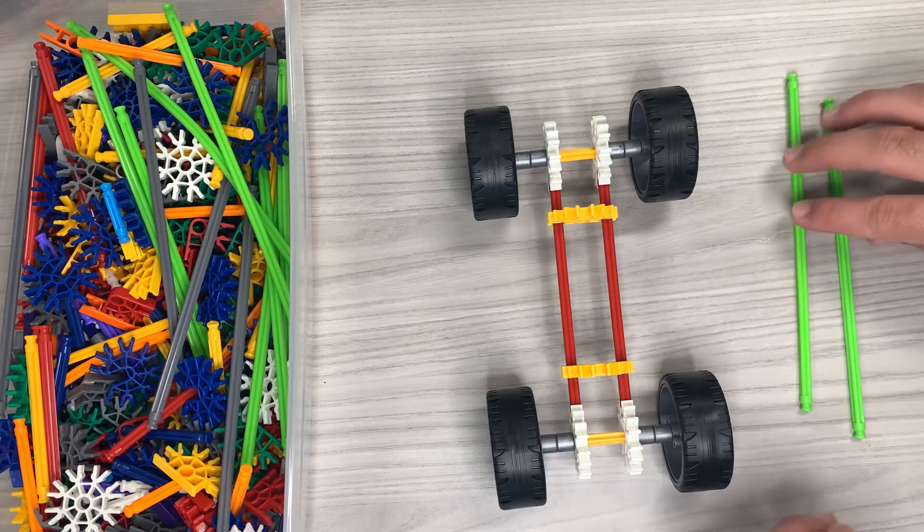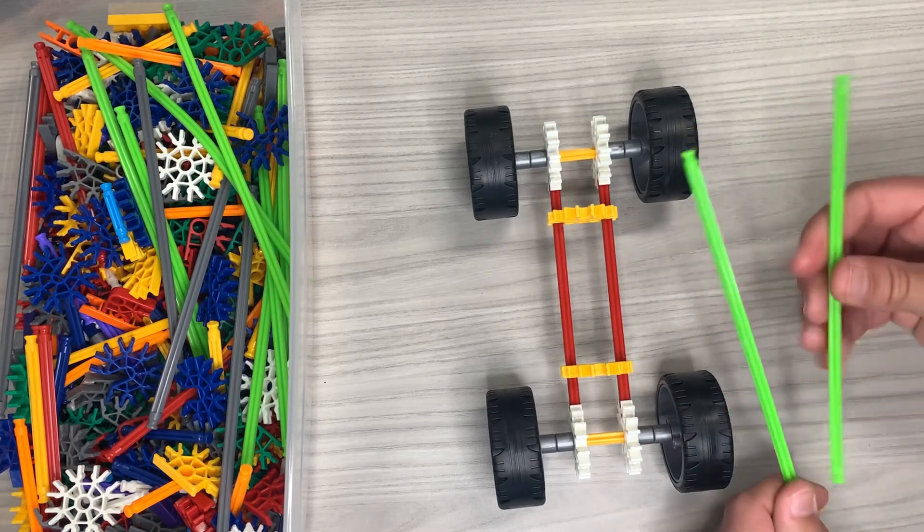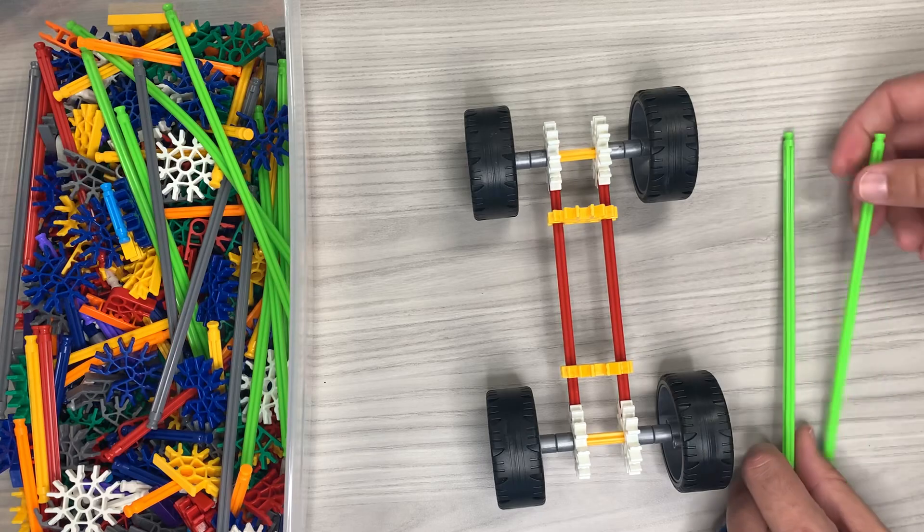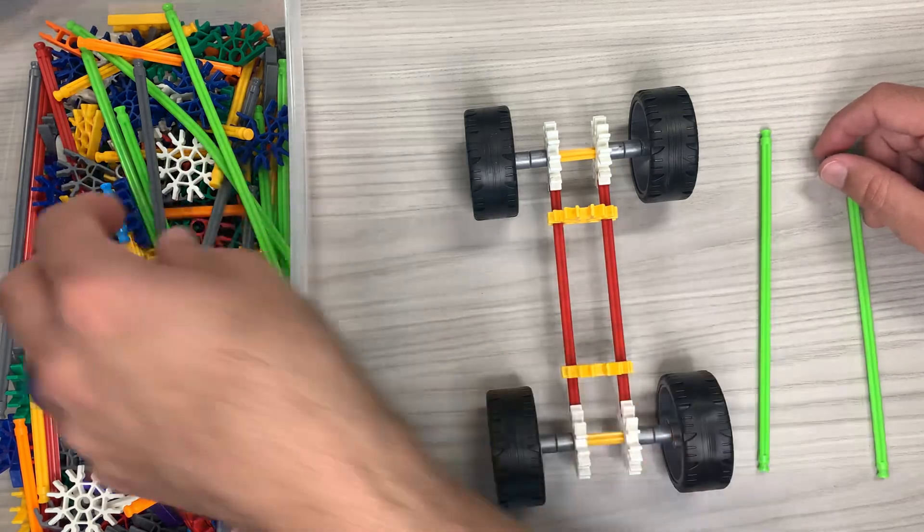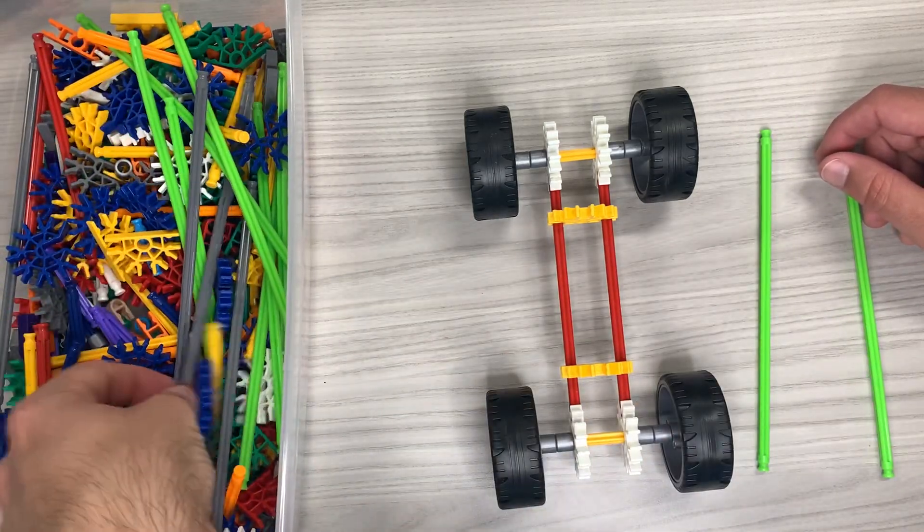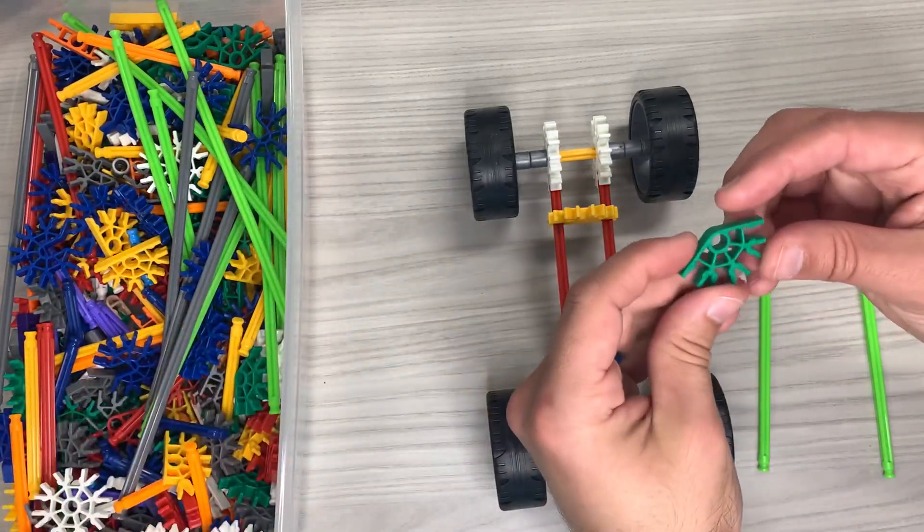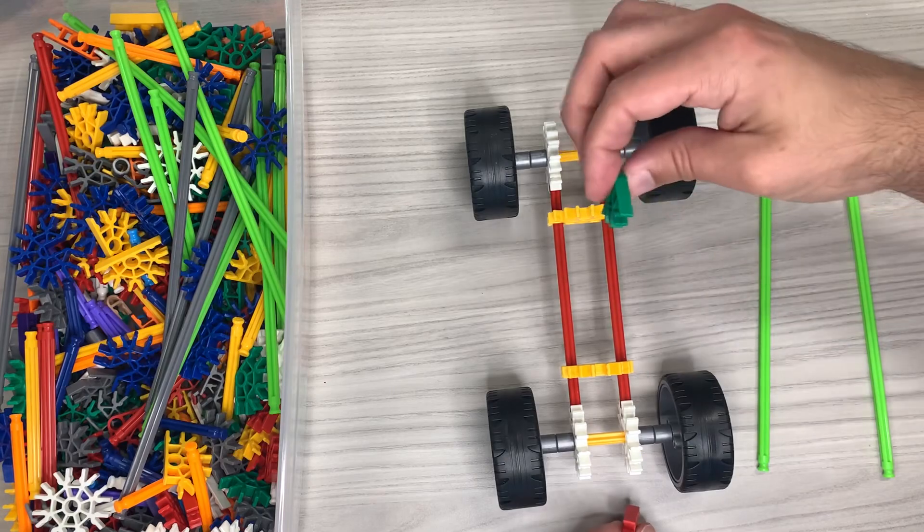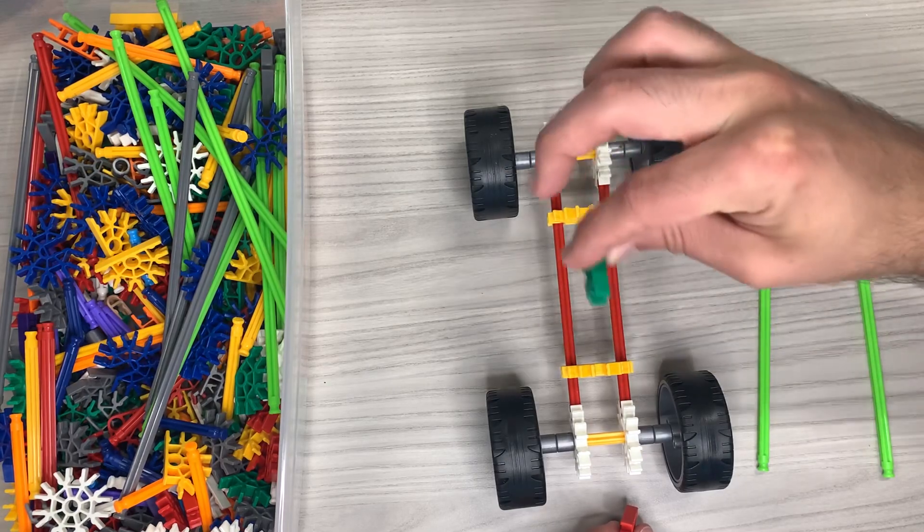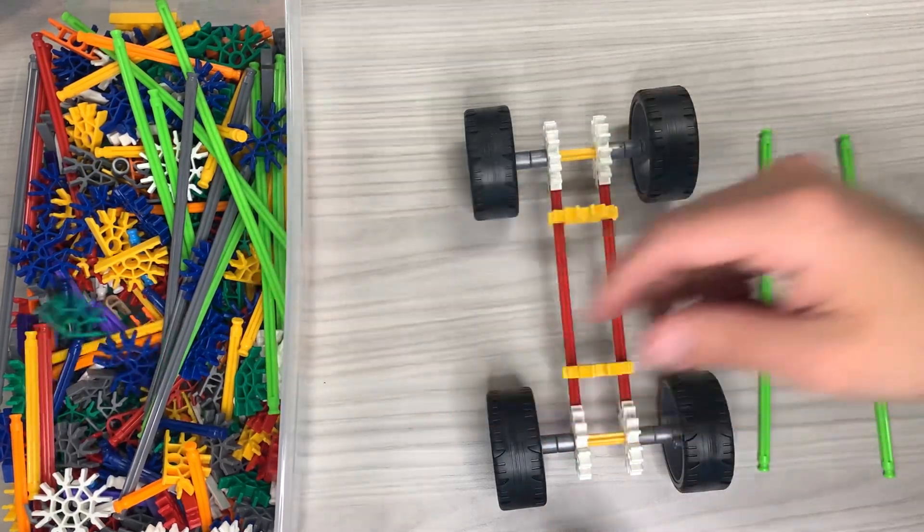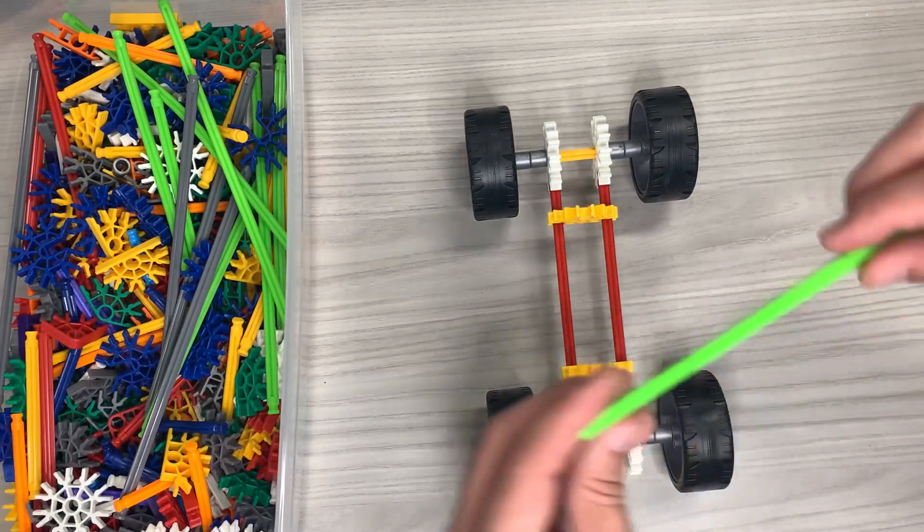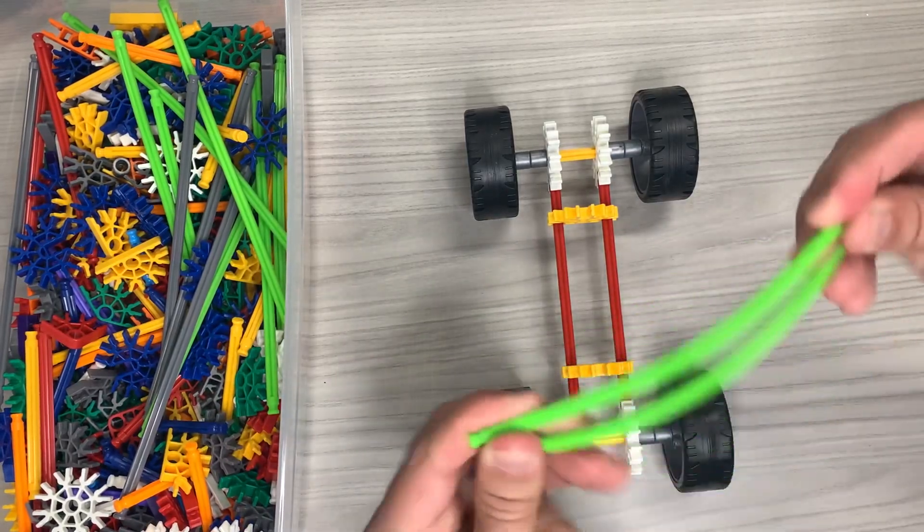All right so the last step for this easy go cart is going to be just these two flexible pieces. If you don't have these flexible pieces you're going to have to make up your own base for the top and that's going to be with maybe some of these green pieces or they'll go here and angle and then connect them. I have these pieces that kind of bend a little bit, they're flexible.